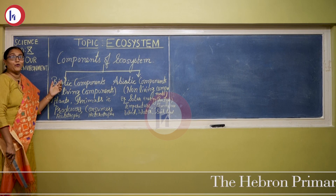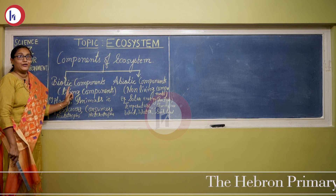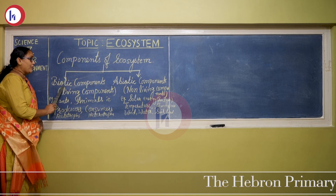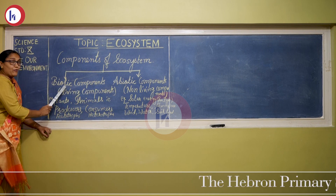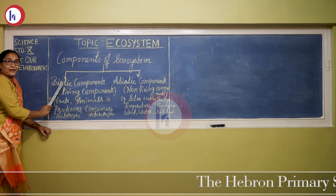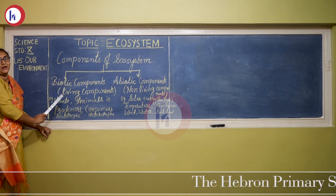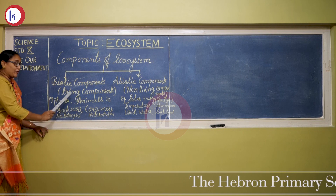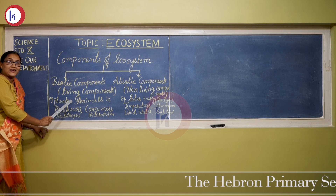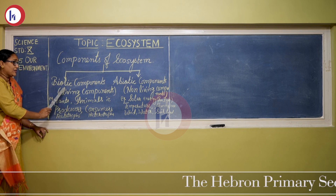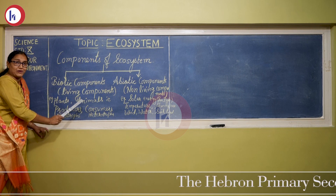The next topic is components of ecosystem. Ecosystem consists of mainly two components: biotic components and abiotic components. As the name indicates, 'bio' means life, so biotic components include all living components — for example, plants and animals.